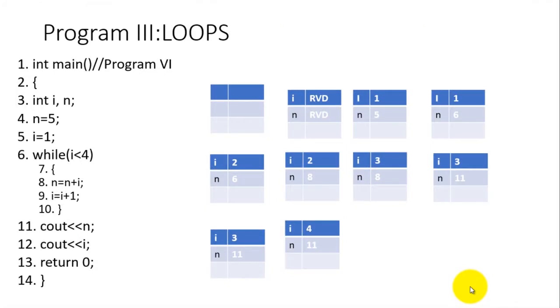Now let us try and understand how our program executes using our physical model. What you see on the screen is our program from line number 1 to line number 14. Lines 1, 2, and 14 are standard lines.